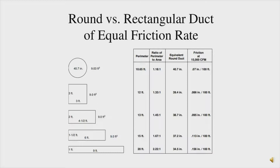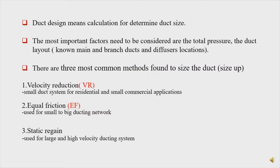The most important thing is we choose the right form of duct — rectangular or round. The second rule is the ratio of width to height of the cross-section of the duct must be as close as possible to 1 to 1 and must never exceed 1 to 3. The third rule is that the width of the duct should be greater than the height of the duct cross-section.